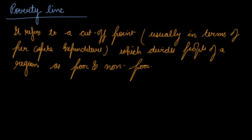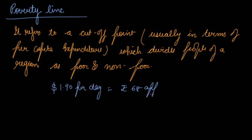According to World Bank research, there are many millions of people who are below the poverty line — they cannot spend even $1.90 per day, which means approximately rupees 68. People in India are so poor that they are not able to spend even 100 or 120 rupees per day on consumption. So the people who cannot spend $1.90 per day are poor and are below the poverty line.